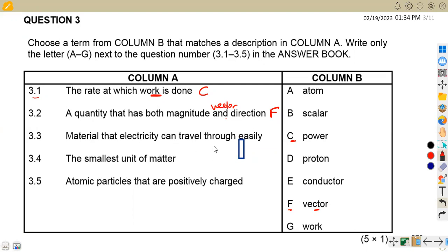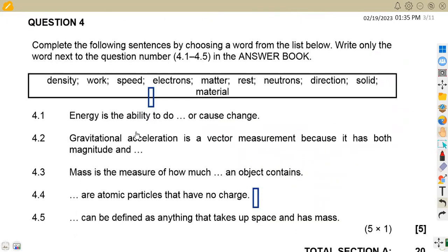Material that electricity can travel through easily is a conductor, and we have it on E. If there is no flow of current, it's an insulator. So this one is a conductor, which is E. 3.4, the smallest unit of matter - this is an atom, that's A. Atomic particles that are positively charged - we're talking of protons here, that's D. Negatively charged are electrons. No charge, that is neutral, which is the neutrons.